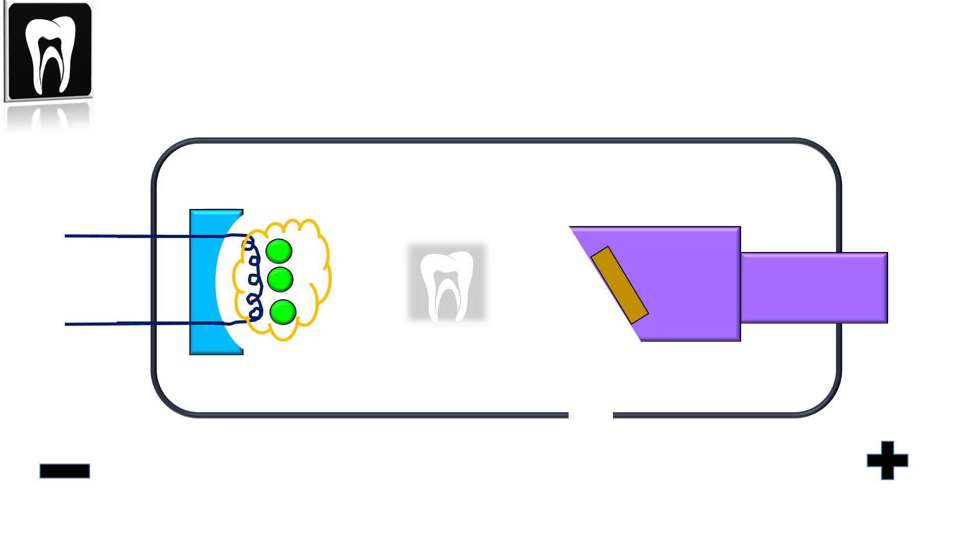The negative focusing cup pushes the negative electrons toward the anode and focuses them into a small area called the focal spot.